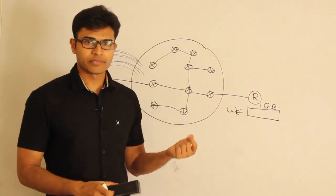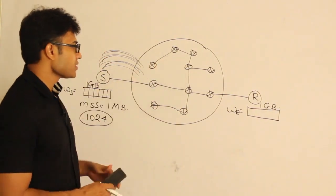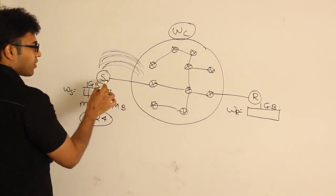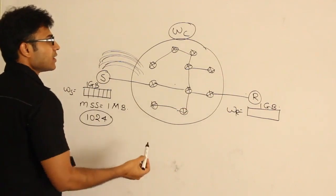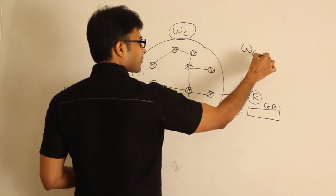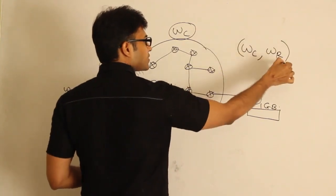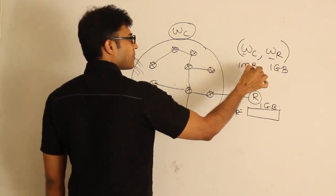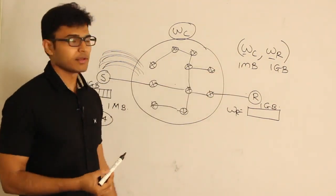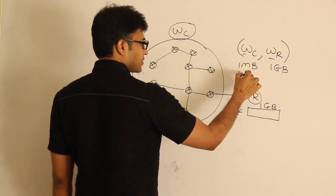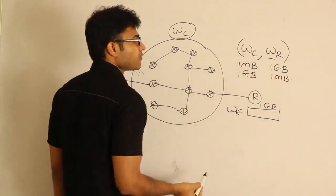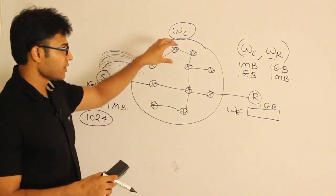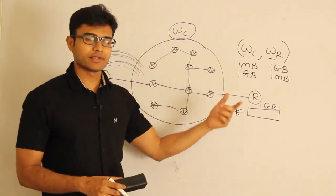We can find the capacity of the receiver using the advertisement window — the receiver sends it explicitly. But we don't know the capacity of the network. Let's say the capacity of the network is WC. We cannot send more than what the network can handle or more than what the receiver can handle. If somehow we found the capacity of the network to be WC, and the capacity of the receiver is WR, then the sender should always send the minimum of these two. If the receiver says 1 GB but the network can only handle 1 MB, then the sender window should be only 1 MB, and vice versa.